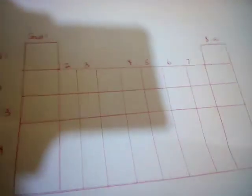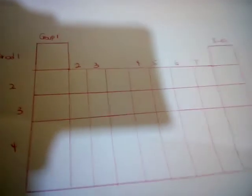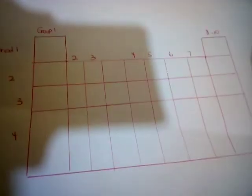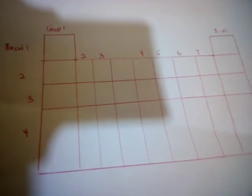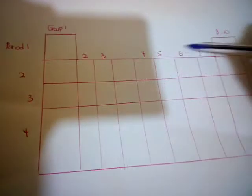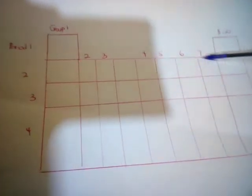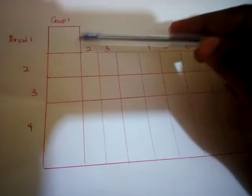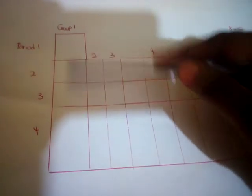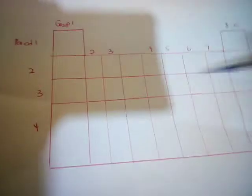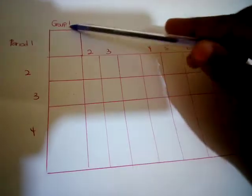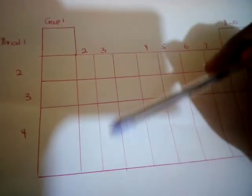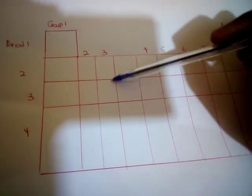Before we start, let me first explain what the periodic table is. The periodic table is an arrangement of elements according to their increasing atomic number, such that those with the same chemical properties are placed in a vertical column called the group. Those with a horizontal arrangement are called the period. So those in group 1 have the same chemical properties, those in group 2 have the same chemical properties, and so on for all the other groups.